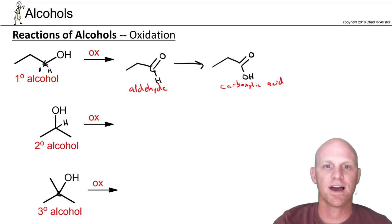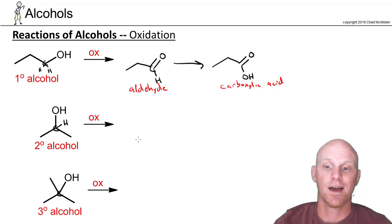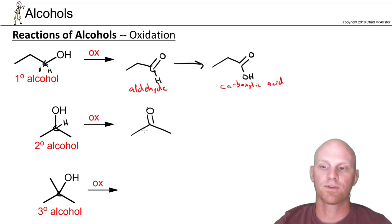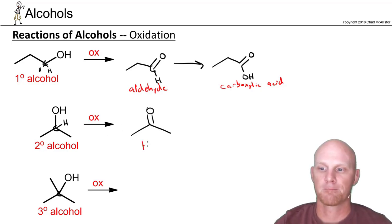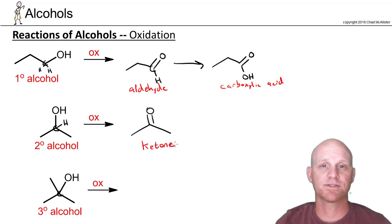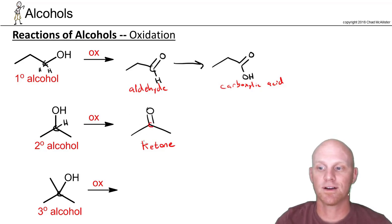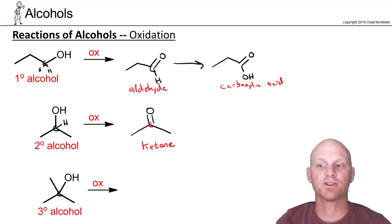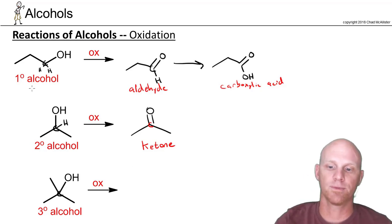For the secondary alcohol, the carbon with the hydroxyl group only has one hydrogen, so only one step of oxidation is even possible. Once we've converted this to a ketone — increased the number of bonds to oxygen by one, decreased the number of bonds to hydrogen by one — our central carbon no longer has any hydrogens and no more oxidation is possible. That secondary alcohol is completely oxidized by any normal means.